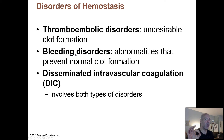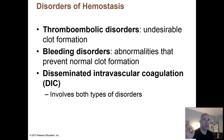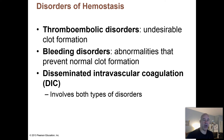If you remember, genes are chemical recipes that tell your cells how to make particular proteins. Well, most of your clotting factors are proteins. So if you have a defect in one or more of those genetic recipes for your blood clotting factors, you're not going to be able to clot your blood properly.